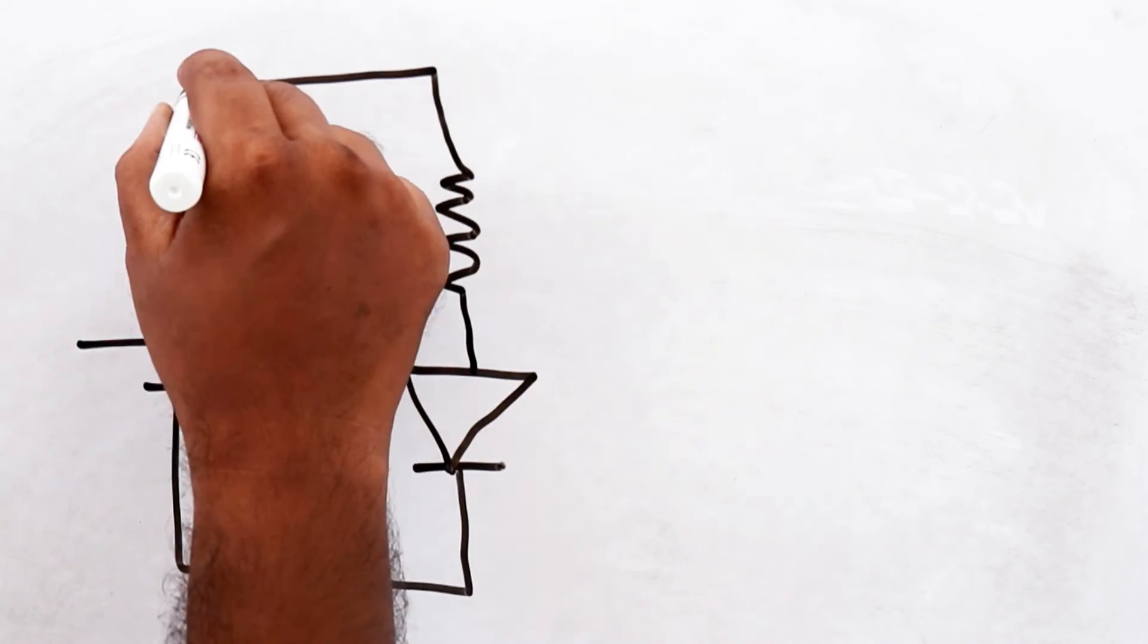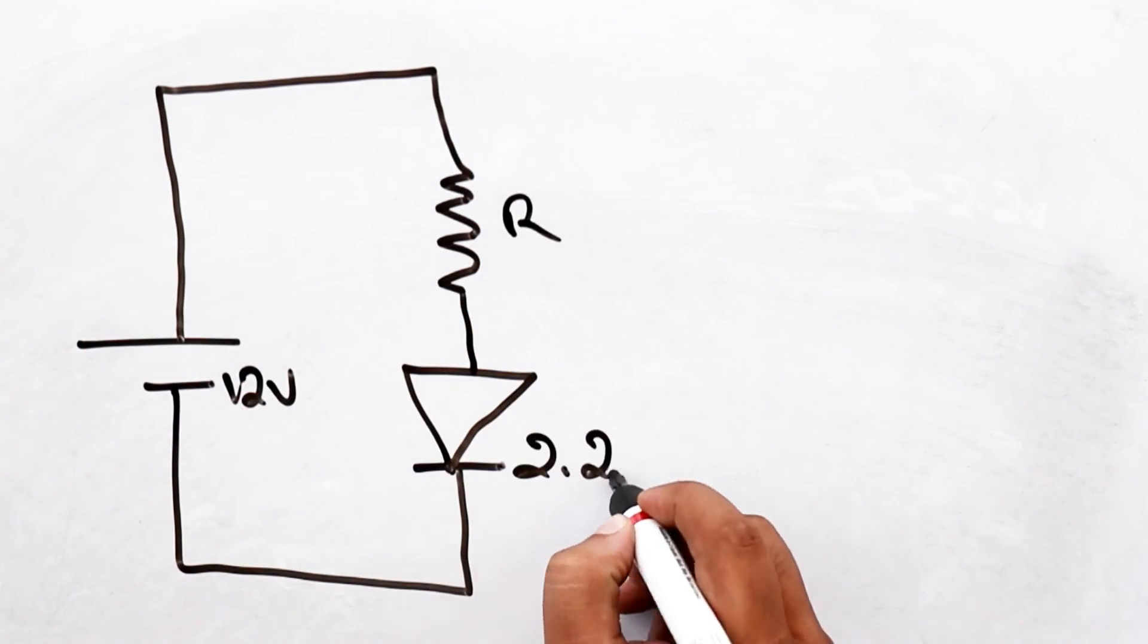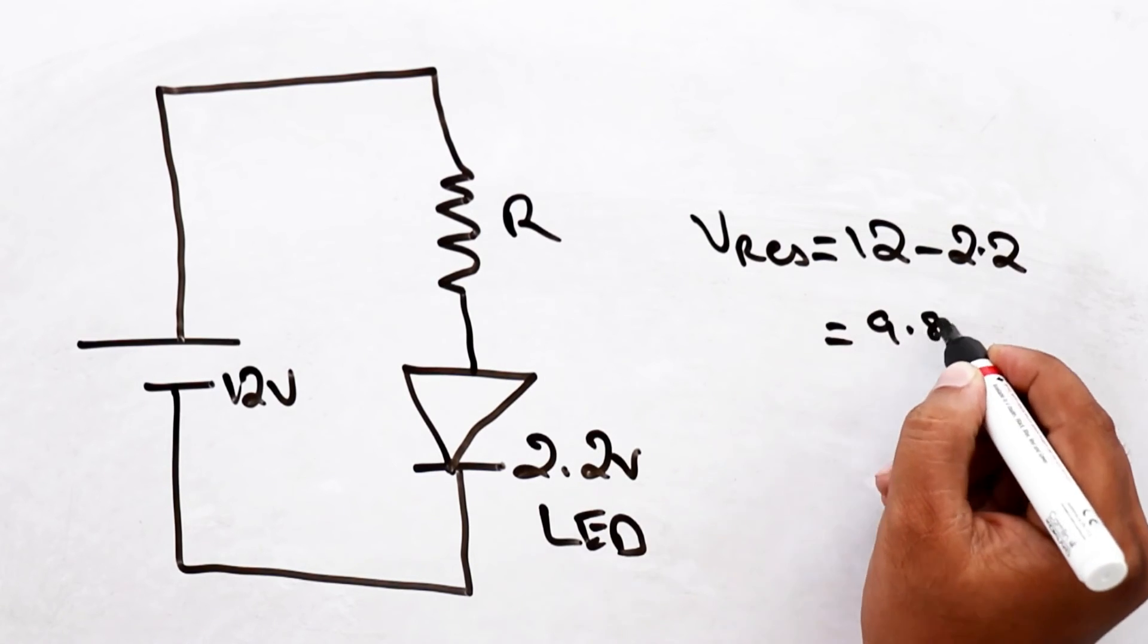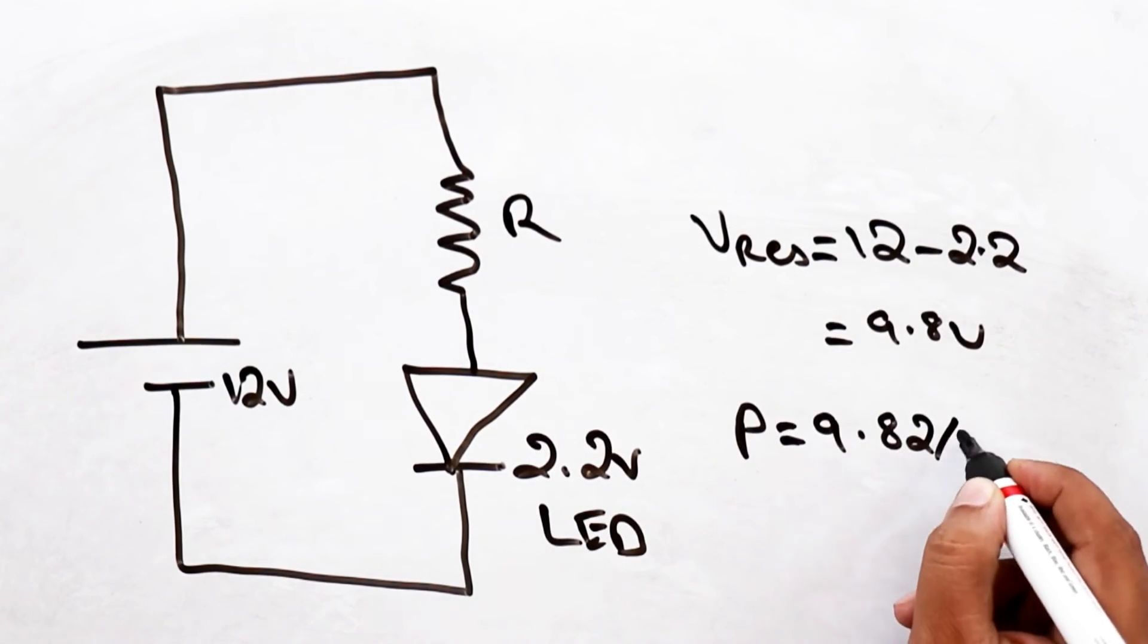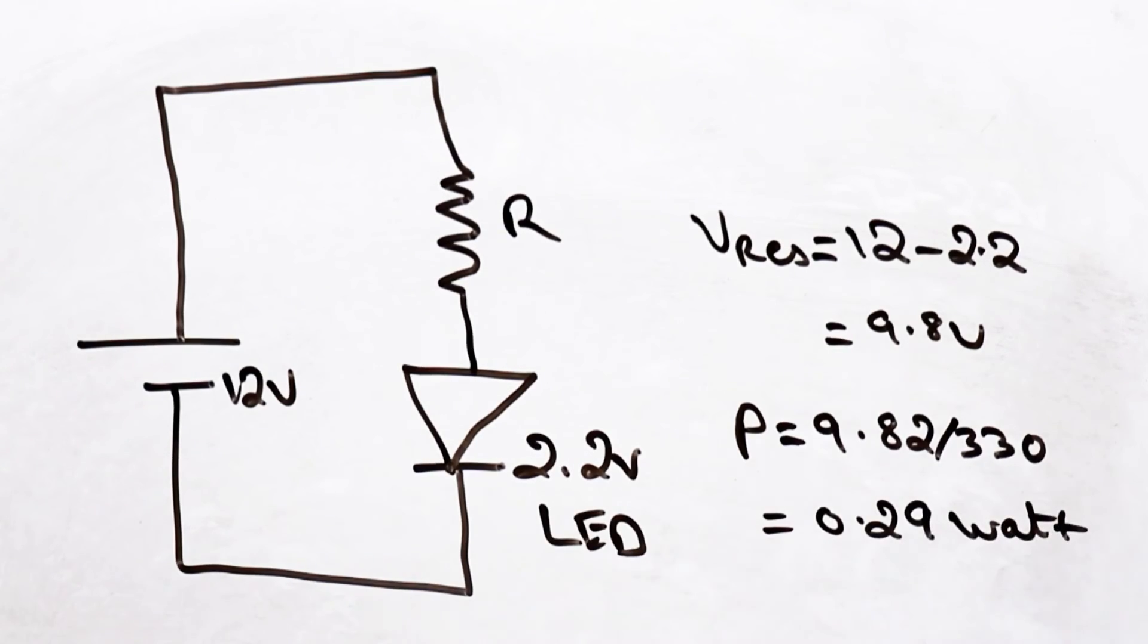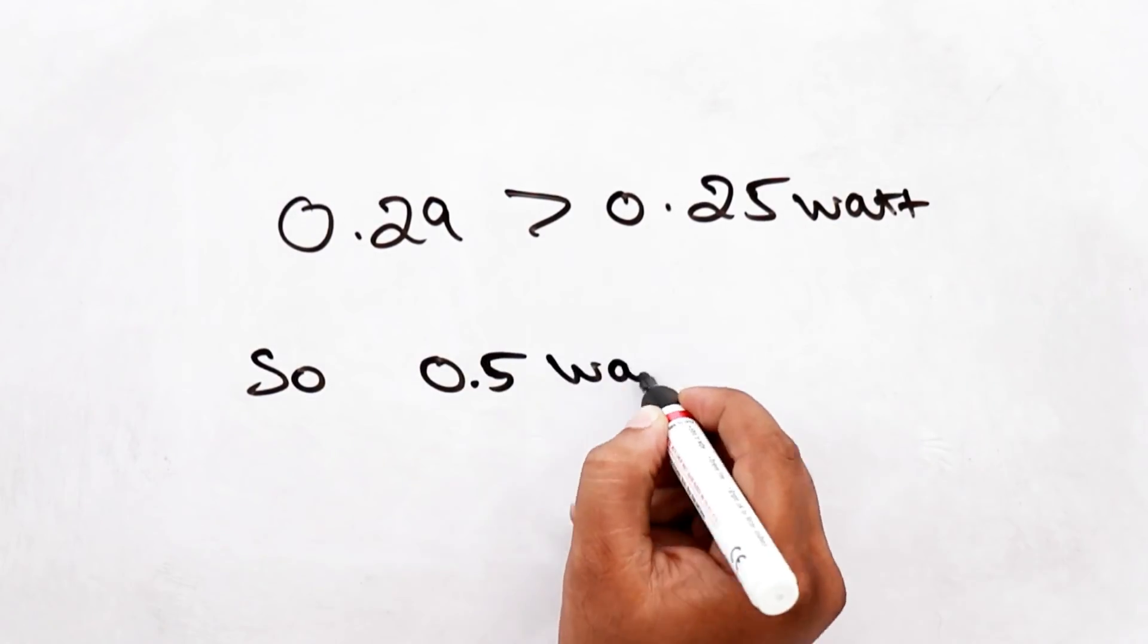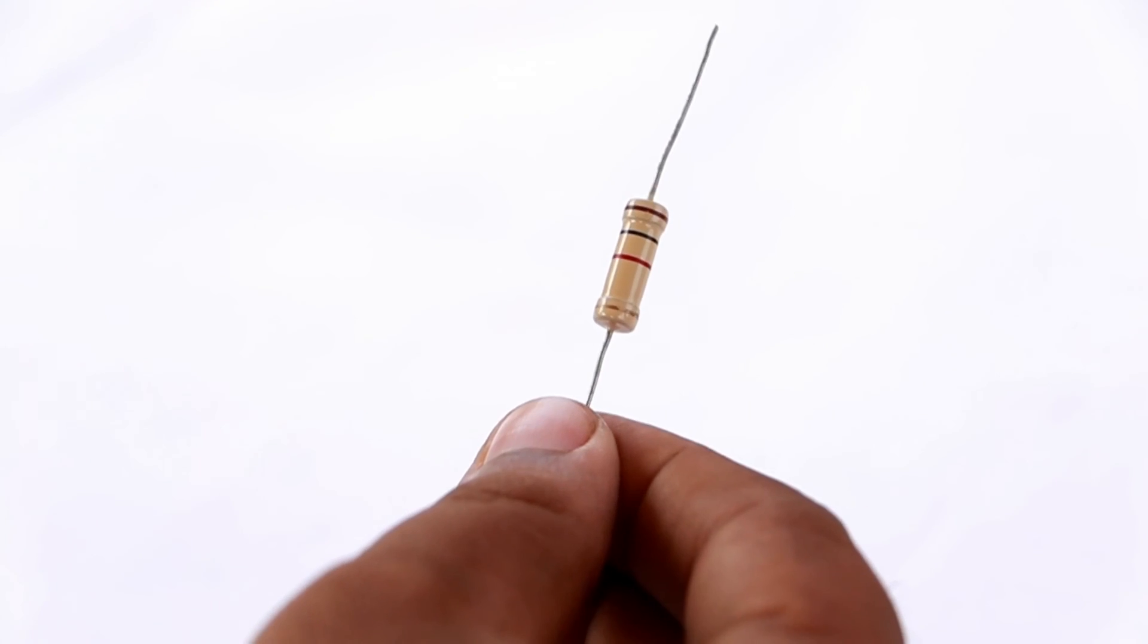Consider you are driving a LED of 2.2V with 12V with a 330 Ohm series resistor. In this case, the power dissipation in the resistor will be around 0.29W. In this case, you have to use a 0.5W resistor to safely operate in the circuit.